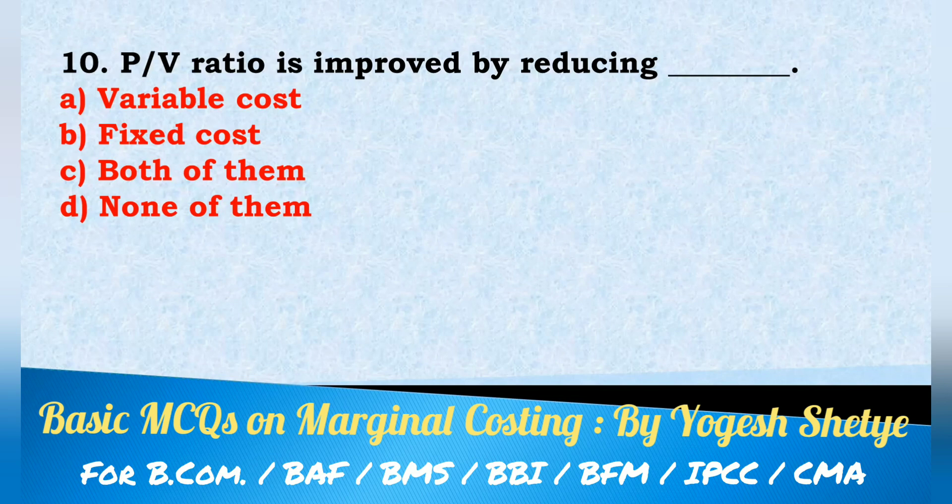P-V ratio is improved by reducing variable cost.